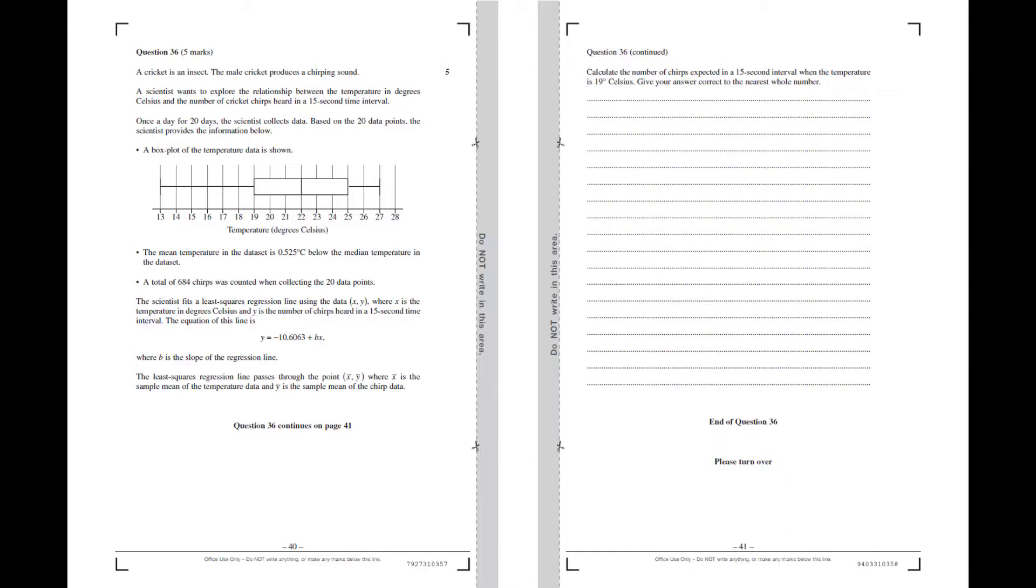So the scientist fits the least squares regression line using the data. X is the temperature in degrees Celsius and Y is the number of chirps heard in the 15 second time interval, and the equation for the line is Y equals negative 10.6063 plus BX, and B is the slope of the regression line. We're also told that the least squares regression line passes through the point X bar Y bar, where X bar is the sample mean of the temperature data and Y bar is the sample mean of the chirp data. So that is a lot of information to take in, particularly in an exam where you've already done 35 questions and you're on to question 36. I can see how this might have been a challenging question for a lot of students.